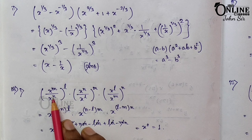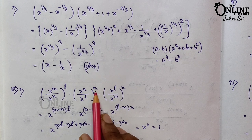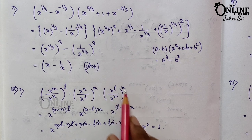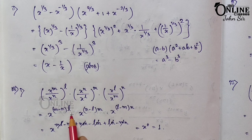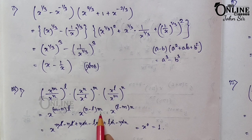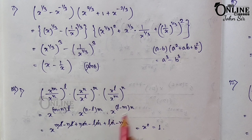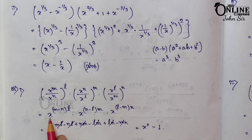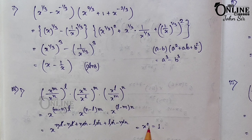Sum 18.1: (x^m / x^n)^l × (x^n / x^l)^m × (x^l / x^m)^n. Each division gives: x^((m−n)l) × x^((n−l)m) × x^((l−m)n). All bases are x, so add the powers: (m−n)l + (n−l)m + (l−m)n = lm − nl + mn − lm + ln − mn = 0. Therefore x^0 = 1.